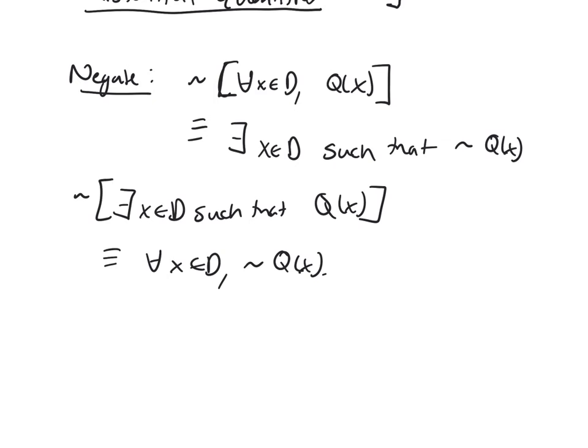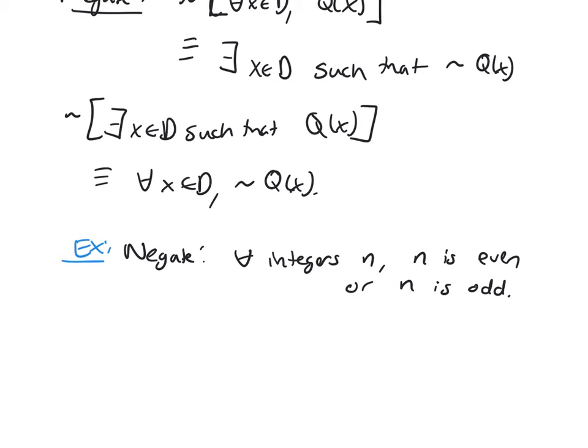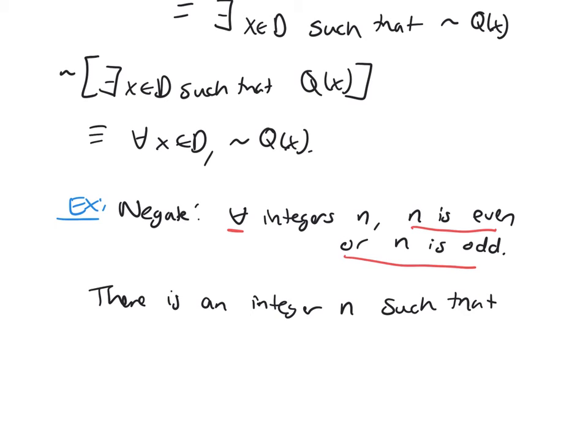Let's look at a couple examples. Negate the statement: 'for all integers n, n is even or n is odd'. What would the negation be? Well, it's a universal, so it becomes existential. There is an integer n such that—and now you need to negate this compound statement with an or. Remember when you negate it, it becomes an and—so n is not even and n is not odd.